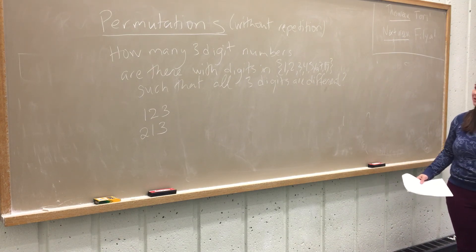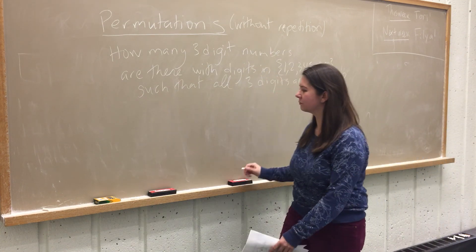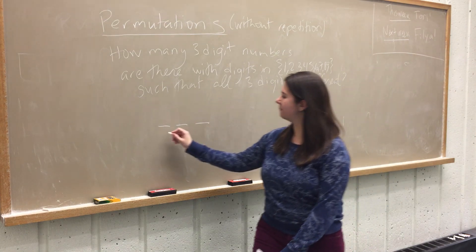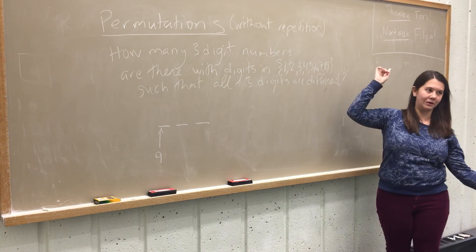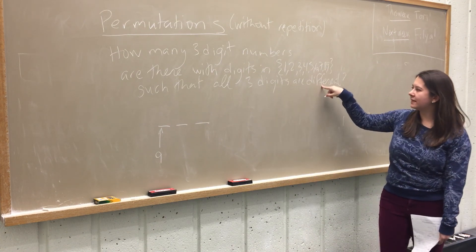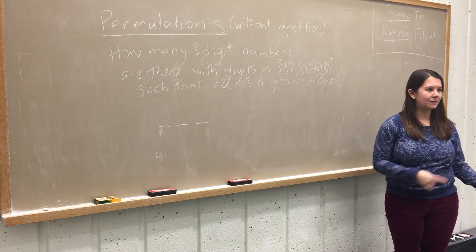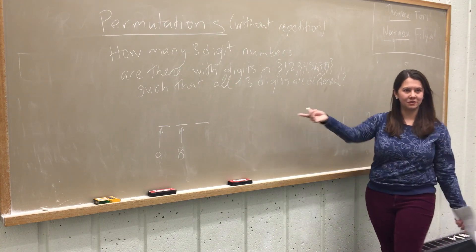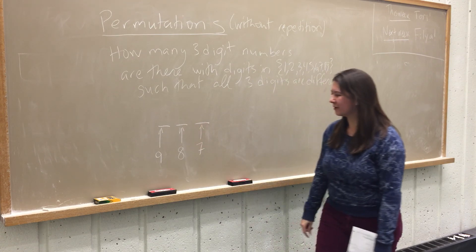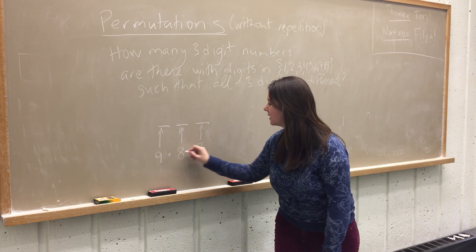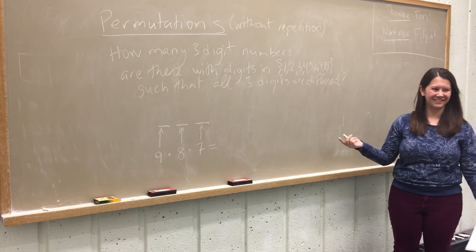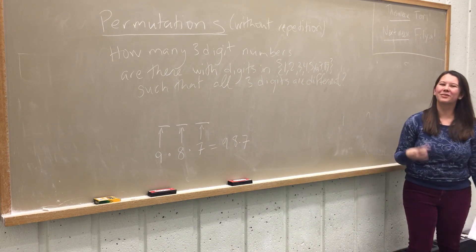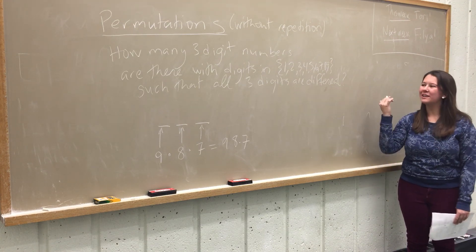We're going to use the rule of product. Think of picking your three-digit number as having three steps. For the first step there are nine possible choices — we can pick anything from one to nine. For the second step, because we're not allowed to repeat, one digit is out of the running, so there are eight ways to choose. How many ways to choose the third digit now that two are out of the running? Seven. So the number of such three-digit numbers is nine times eight times seven.